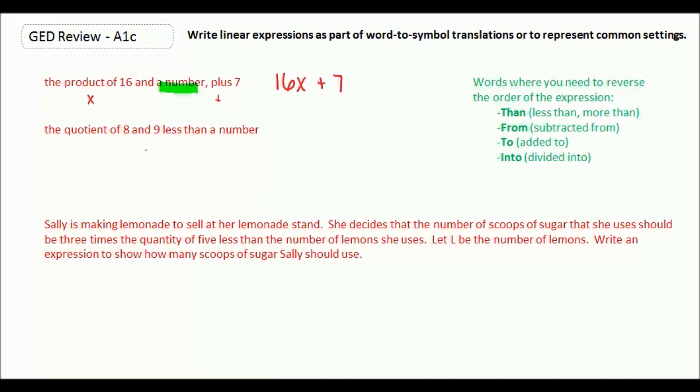This one here says the quotient of 8 and 9 less than a number. Quotient means division, and 'and' tells you where you're going to break up your division. So the quotient of 8 means 8 goes on top, and then 9 less than a number is what's going to go on the bottom.